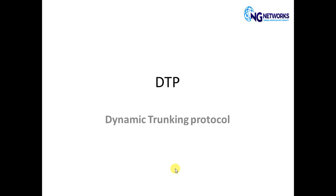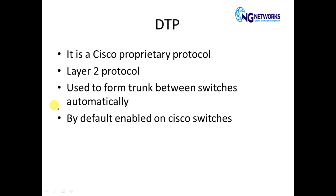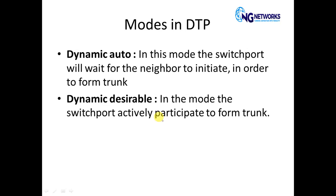In this video I am going to tell you about DTP. DTP stands for Dynamic Trunking Protocol. This protocol is basically a Cisco proprietary protocol, which is a Layer 2 protocol, meaning it runs only on Cisco devices and it operates at Layer 2 of the OSI model. This protocol is used to form trunks automatically between two switches, and the DTP feature is by default enabled on Cisco switches.